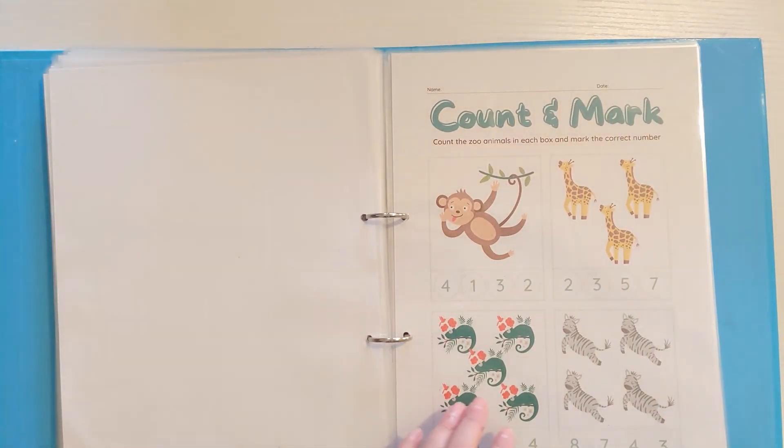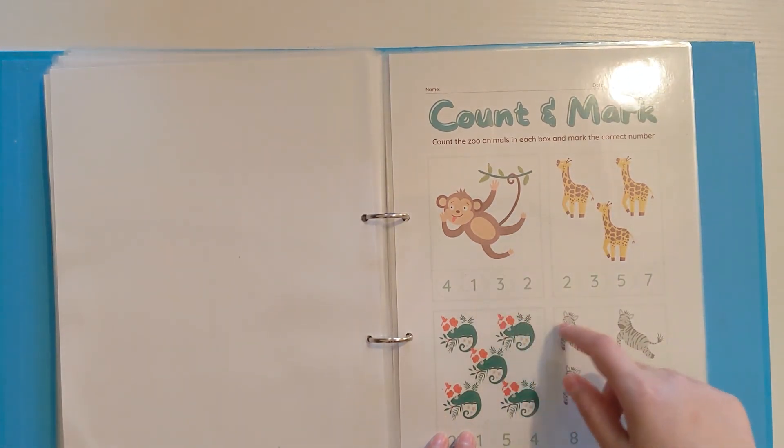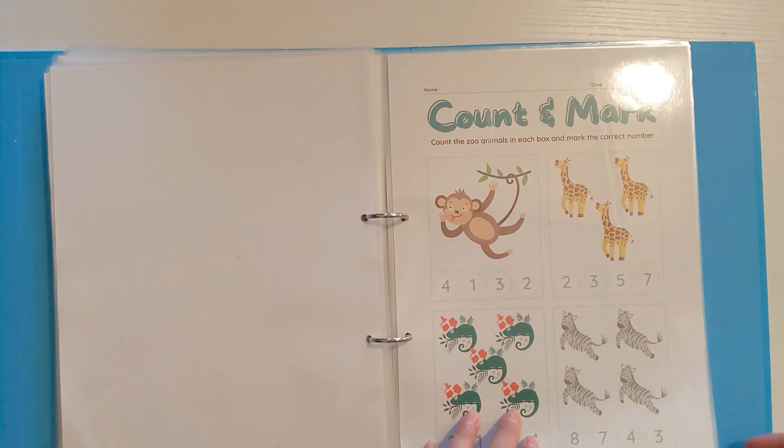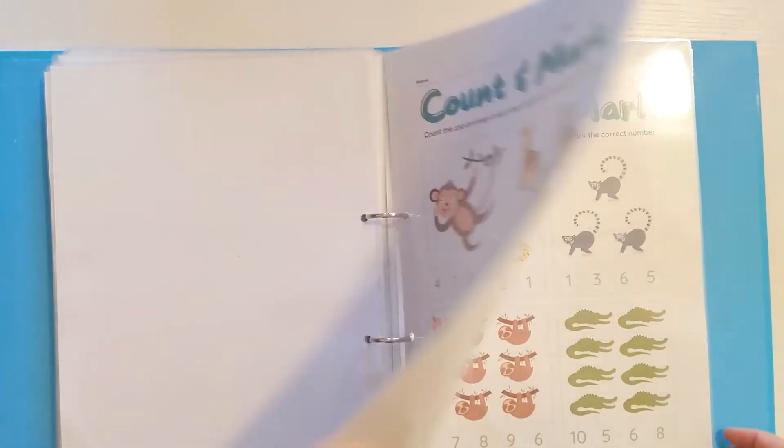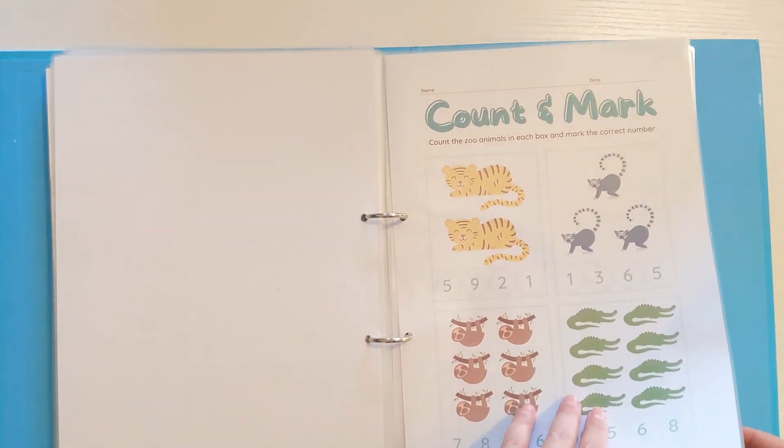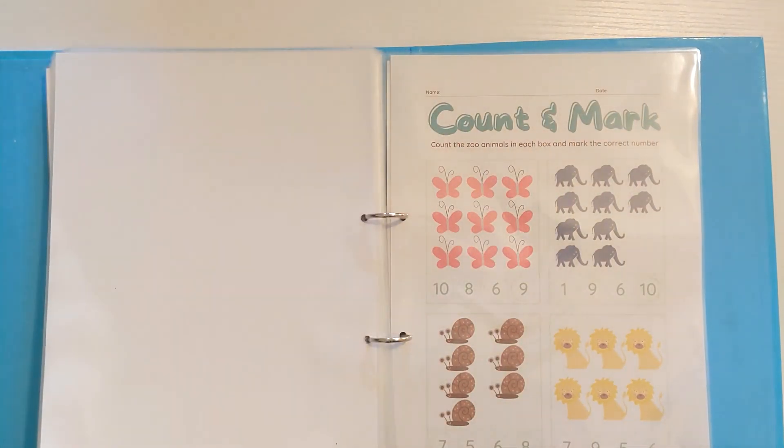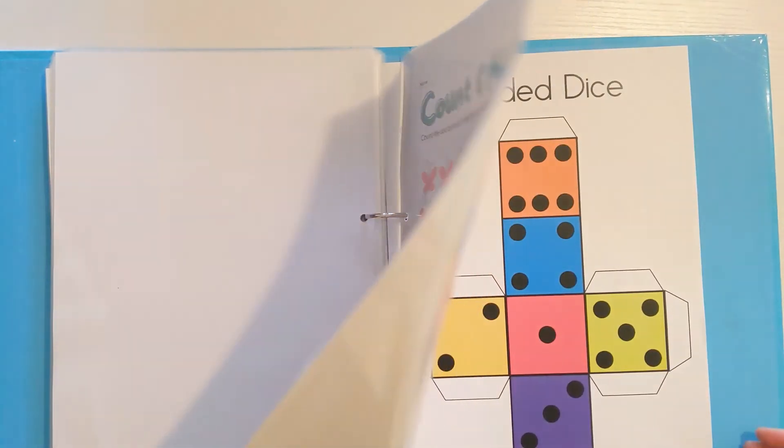Then I've created some count and mark sheets using zoo animals. We start off with the smaller numbers. We've got number one, number three. All they have to do is circle the correct number for this activity. Again, helping them understand that numbers correspond to real life objects or representations. We've done that for quite a few different numbers within one, two, ten, and lots of different animals just to make it really fun for them.